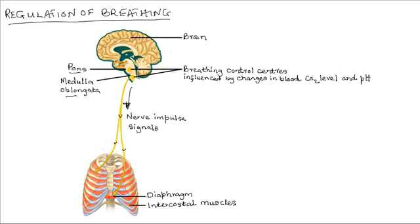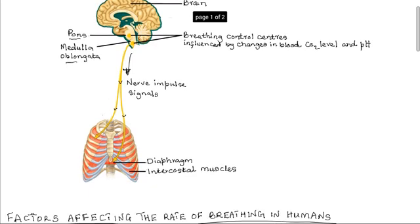When there is low carbon dioxide concentration in the blood reaching the medulla oblongata and the pons, the normal rate of breathing is restored, and these centers of the brain will maintain the normal breathing rate.